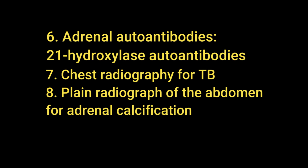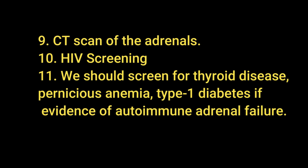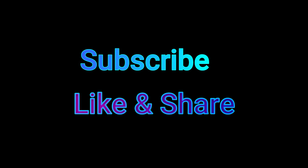If Addison's disease is suspected, we need to find the cause. Investigations include adrenal autoantibodies such as 21-hydroxylase autoantibodies, chest radiograph for tuberculosis, plain abdominal radiograph for adrenal calcification, CT scan of the adrenal glands, and HIV screening. We should also screen for thyroid disease, pernicious anemia, and type 1 diabetes if evidence of autoimmune adrenal failure is present. Thank you for watching — please subscribe and share the channel.